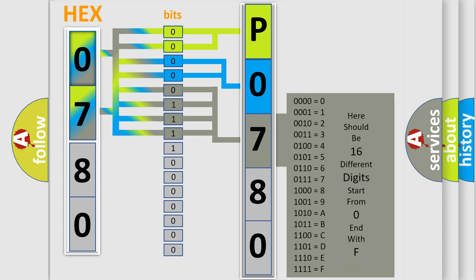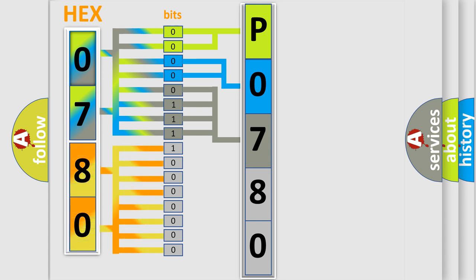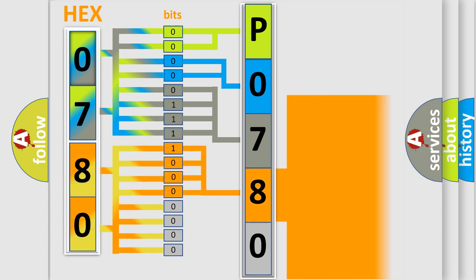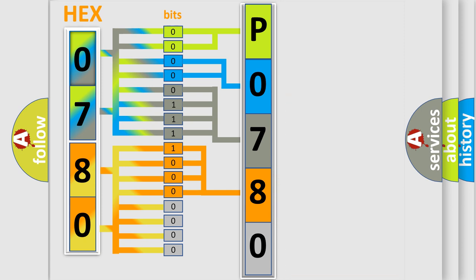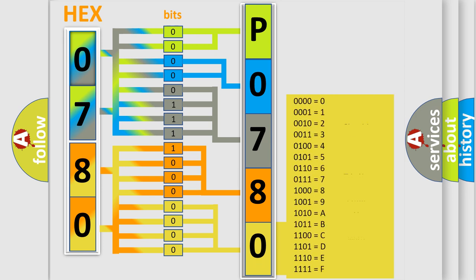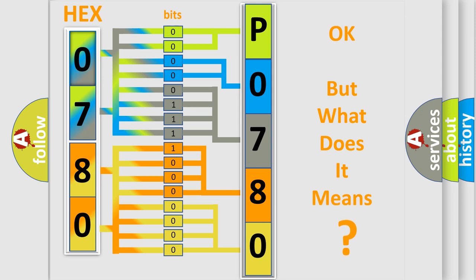The second byte is composed of a combination of eight bits. The first four bits determine the fourth character of the code, and the combination of the last four bits defines the fifth character. A single byte conceals 256 possible combinations. We now know in what way the diagnostic tool translates the received information into a more comprehensible format.